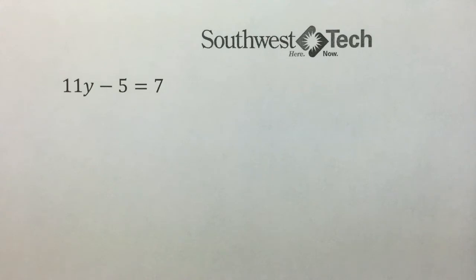To solve an equation that has more than one operation, we are going to reverse the order of operations to undo and solve for the variable.